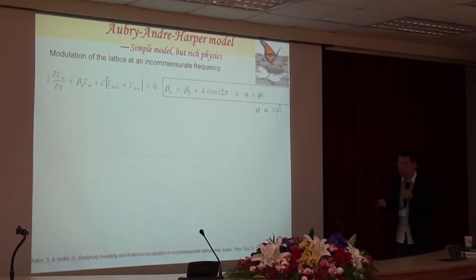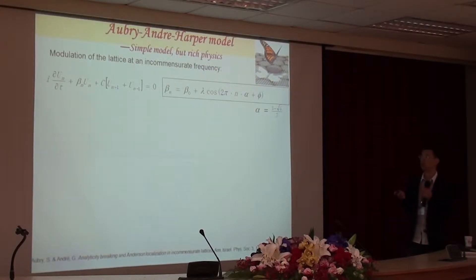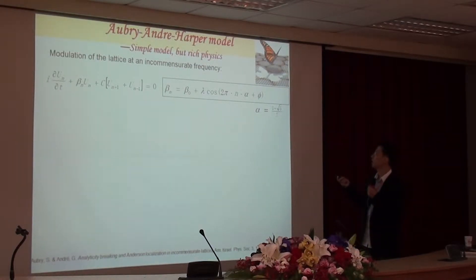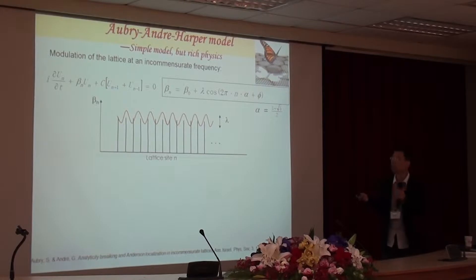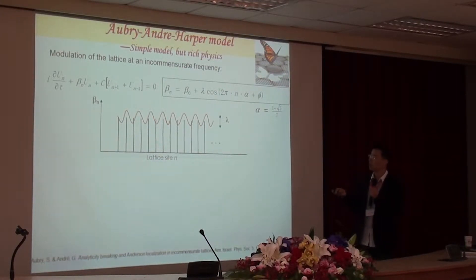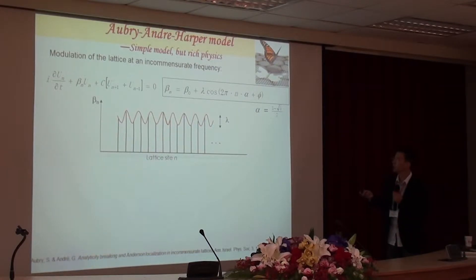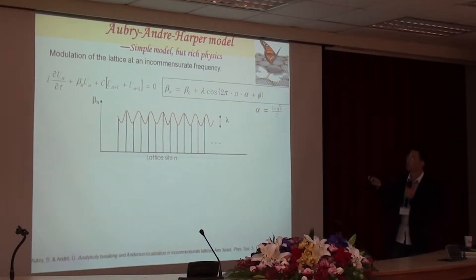Here I give some results about the quasi-periodic lattice. This model is called the Aubry-André model. It is a tight-binding model where we modulate the on-site potential by an incommensurate frequency alpha. Because the modulation frequency is incommensurate with the lattice period, we can use alpha — an irrational number — to indicate the characteristic of this property.